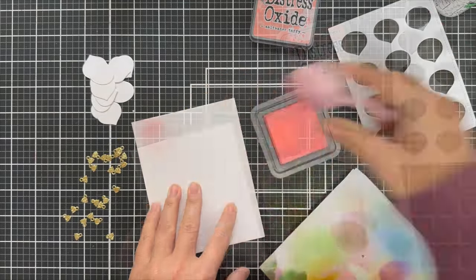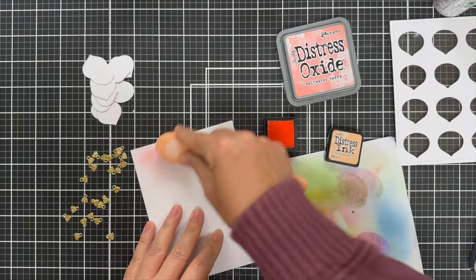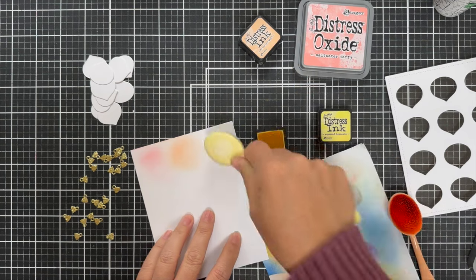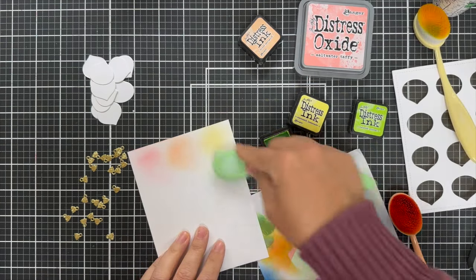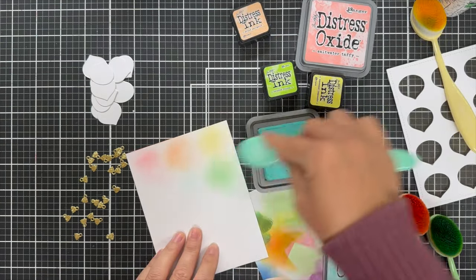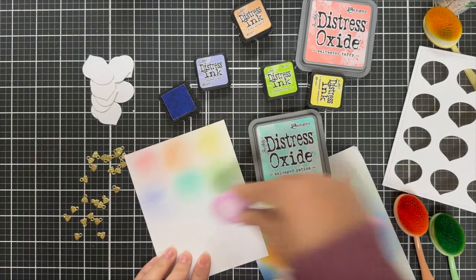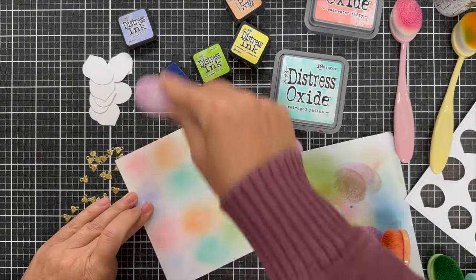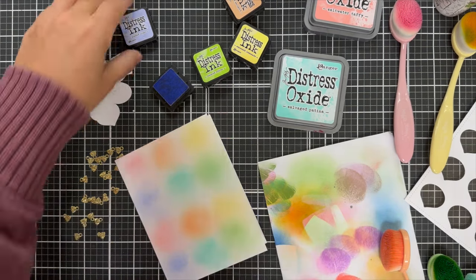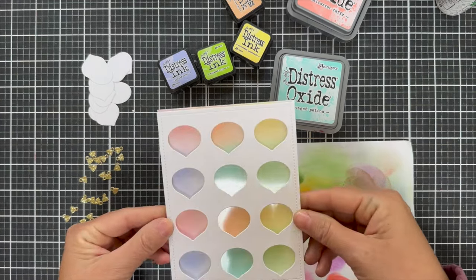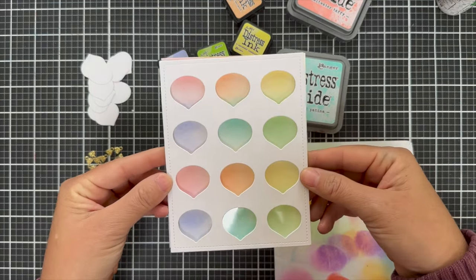So I'm using some Distress Inks. Saltwater Taffy, Dried Marigold. I think that's what that is. A little Squeeze Lemonade, Twisted Citron, some Salvage Patina, and a little Shaded Lilac. And I just, very light, just a little circular blending. It doesn't have to be perfect, but that'll give each little ornament a little bit of color. Look at how subtle that is, but still cheery.